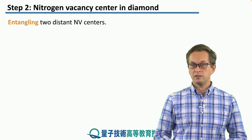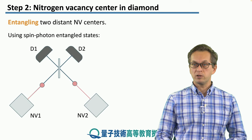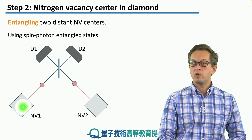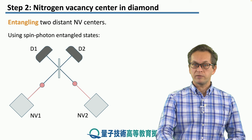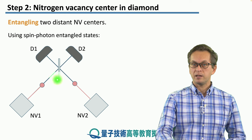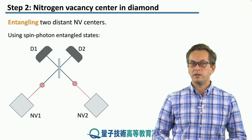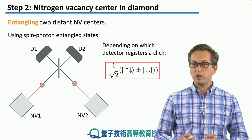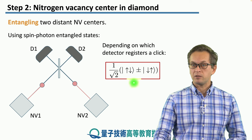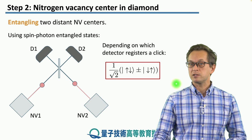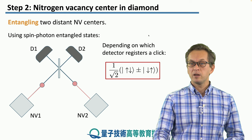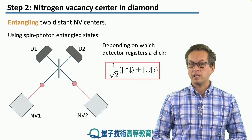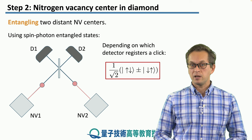How do we entangle two distant NV centers? That's fairly straightforward, at least at the conceptual level. We have two nitrogen vacancy centers, NV1 and NV2, and they are both made to emit a single photon at the same time. These photons are then collected into fibers and meet at a beam splitter, with two detectors D1 and D2 placed after the beam splitter. Depending on which detector registers a click, we perform a Bell state measurement, projecting the state of the electron spins in NV1 and NV2 into an equal superposition of up-down and down-up — with the phase depending on the pattern of clicks observed at D1 and D2. So effectively, we are creating a psi-plus or psi-minus state of the electron spins at the NV centers in diamond.